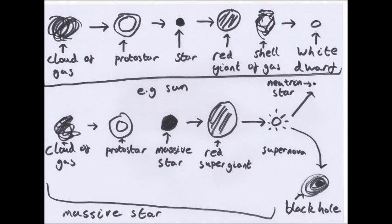Stars have a life cycle. A normal star and a massive star have slightly different cycles. Both start as a cloud of gas — a nebula — pulled together into a protostar, which then starts reacting to form a star. Stars can remain stable for about 10 billion years until they've fused most of their hydrogen to helium. When this happens the core is not hot enough to withstand gravity, it collapses, and the outer layers expand to form a red giant star.